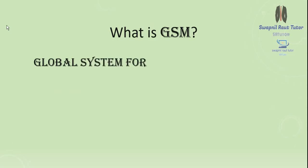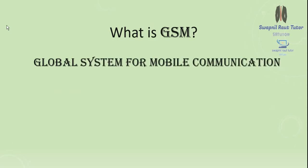So what is GSM? GSM is the Global System for Mobile Communication. The first version of GSM was developed by the Group of Special Mobile in 1982 in Europe. It is the second generation mobile communication standard and one of the most popular mobile communication standards.